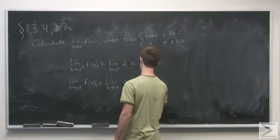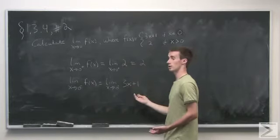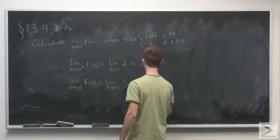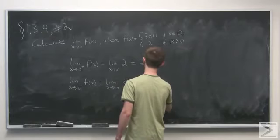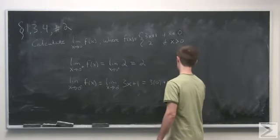Okay, so let's see. Here this is well defined, and we can just stick in zero to evaluate this limit. So we end up with 3 times zero plus 1, which is just 1.